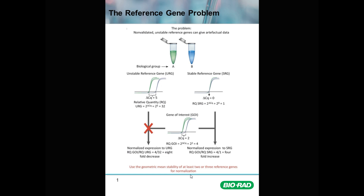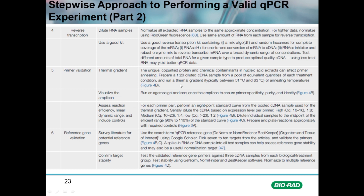In order to select a good stable reference gene or set of reference genes, there is a table in the article Trends in Biotechnology that describes how to do this. Step six of reference gene validation describes how to use a search term in Google Scholar: type 'qPCR reference gene' and either geNorm, NormFinder, or BestKeeper — the three commonly used software tools to assess reference gene stability between samples. Then type the organism and tissue of interest, and that will return published papers where authors used these tools to determine reference gene stability for your particular organism and tissue.